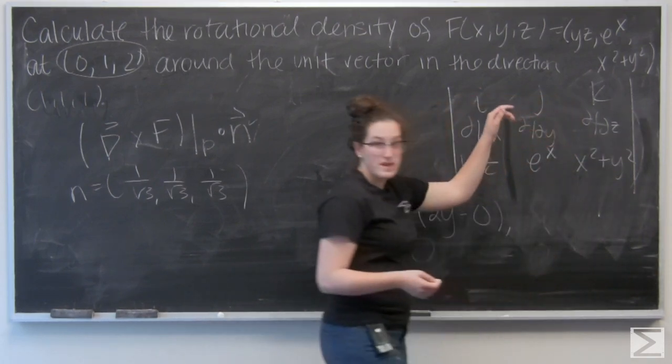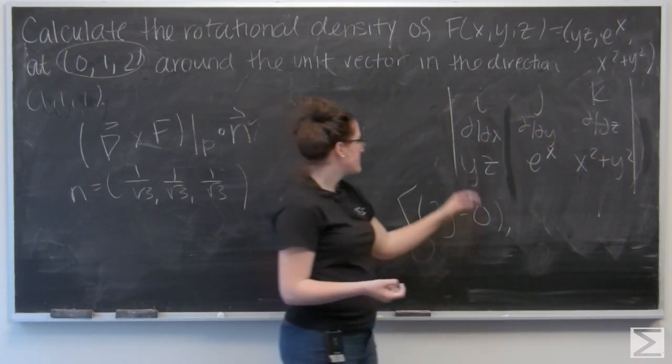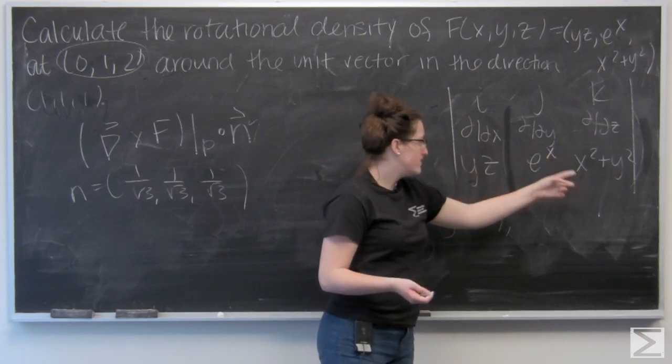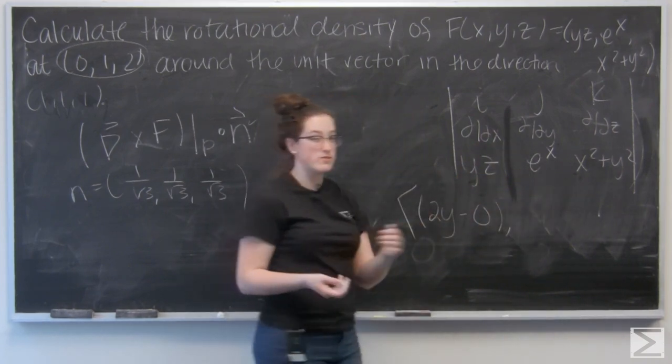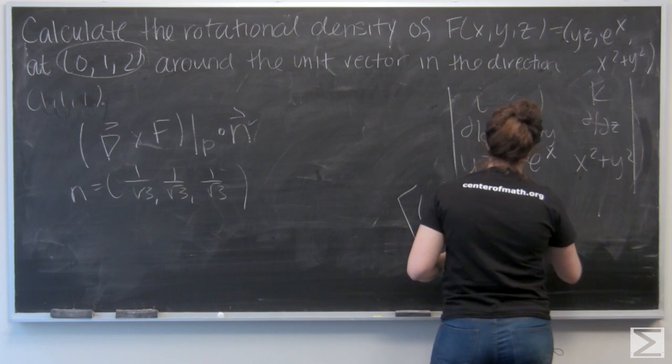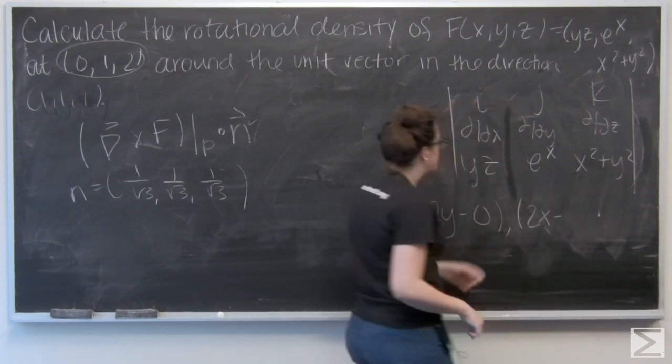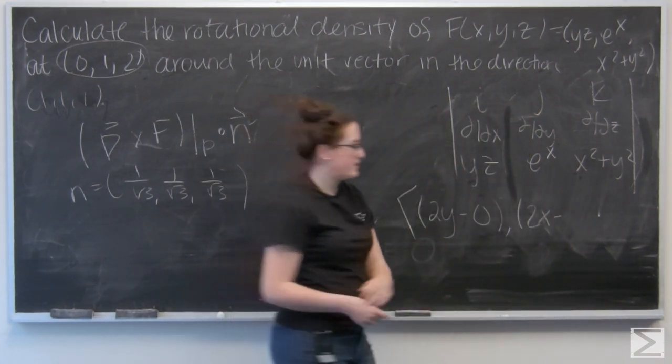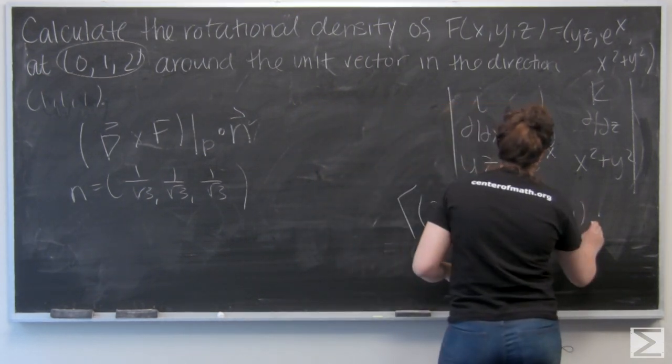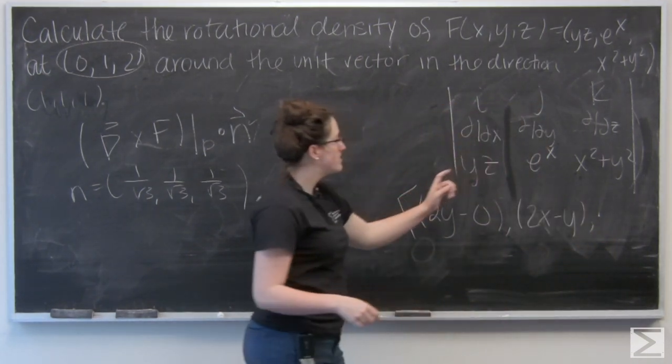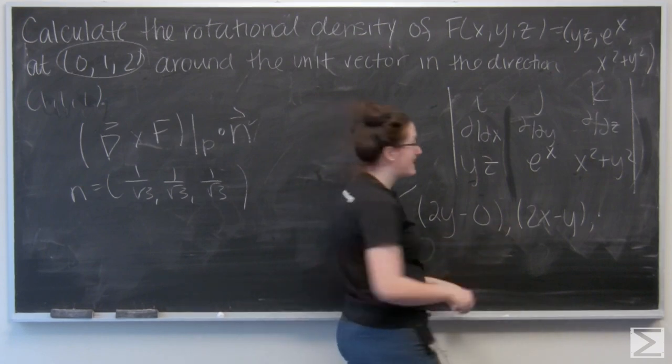And now let's do j. So again, cut the top row, this time cut the middle column. I have the partial derivative of x squared plus y squared with respect to x minus the partial derivative of yz with respect to z. And since the sign alternates here, my j component is going to be multiplied by negative 1.